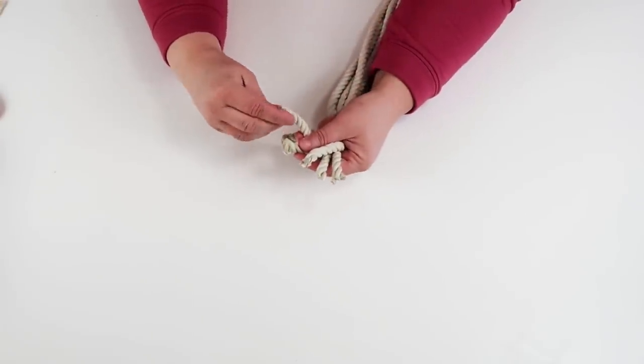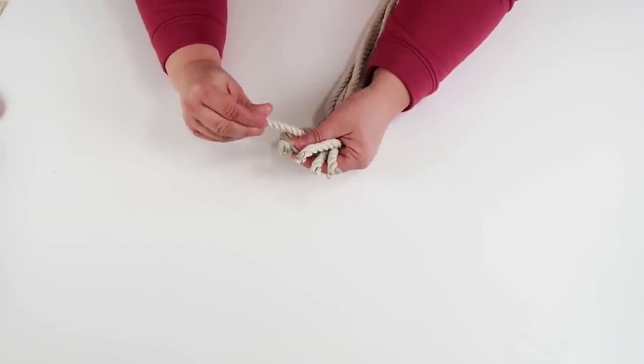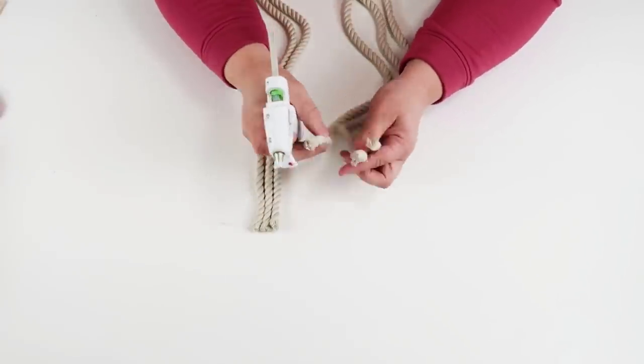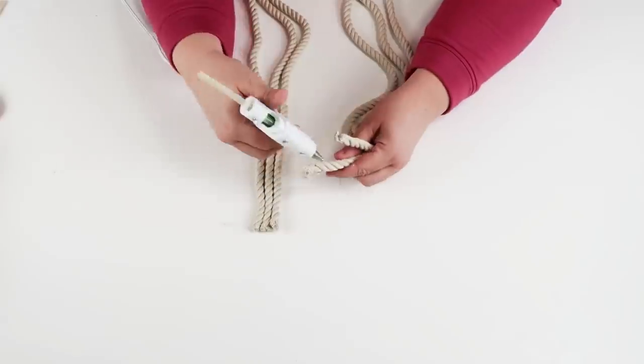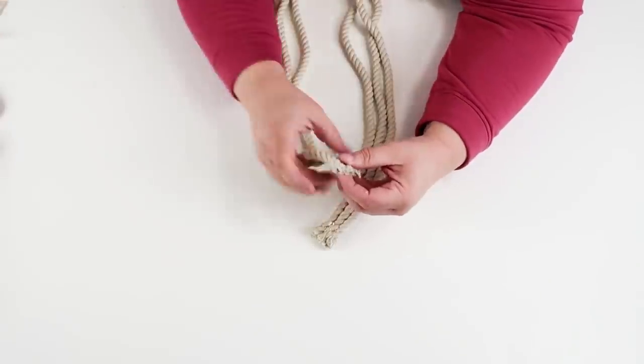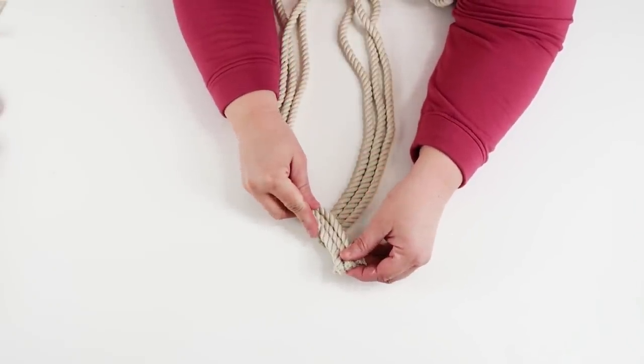We're going to start weaving them together. My best tip is to make sure at the very end you put a little bit of glue and twist them into place, so that way they don't come unraveled as you're working with them.